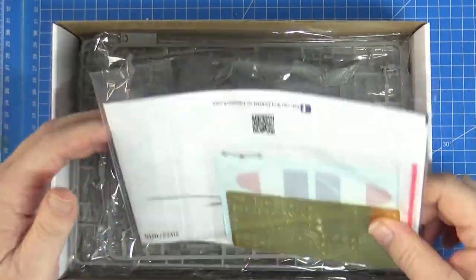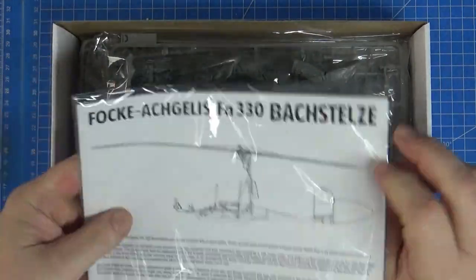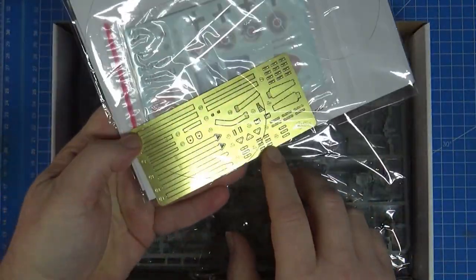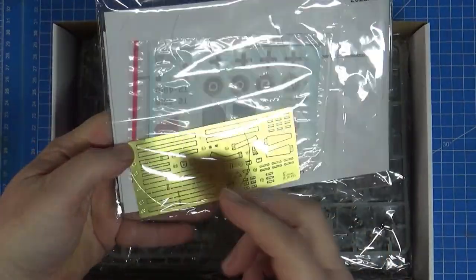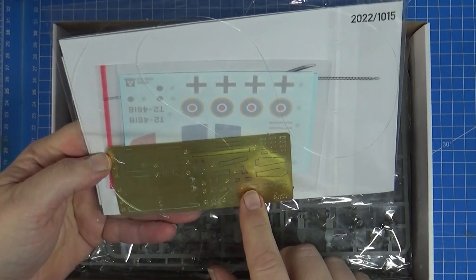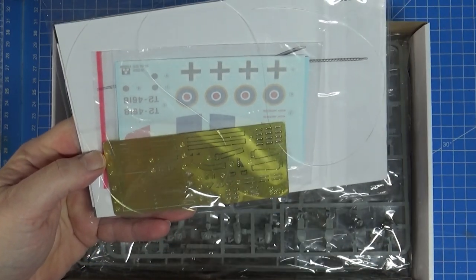I've only opened this up to look at the pilot. I haven't looked at anything else. Instruction booklet's in a nice plastic bag. There's a big photo etch, which most of this is seatbelts, but there are a few other little pieces. Some control rods for the rotors.